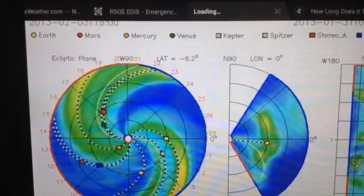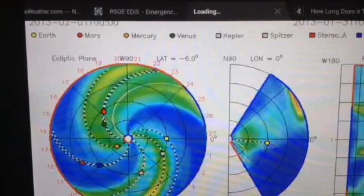What is strange is Mercury is spinning out of control. Mercury is the orange.